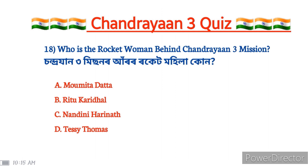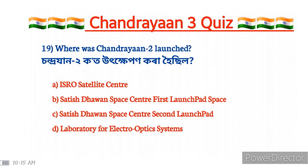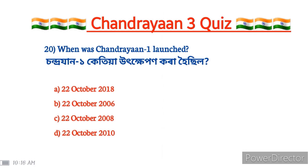Who is the rocket woman behind the PSLV? The correct answer is option C. When was Chandrayaan-1 launched? The Satish Dhawan Space Centre was the 2nd launch site.